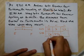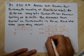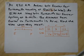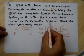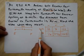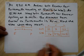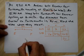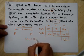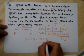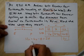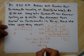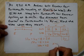Using rate times time equals distance: Andrew's distance is 12X, and Stacey's distance is 16 times (X minus one-half), which distributes to 16X minus 8. Since their combined distances must equal 20 miles, the equation is: 12X plus 16X minus 8 equals 20. That simplifies to 28X minus 8 equals 20, then 28X equals 28, so X equals 1.